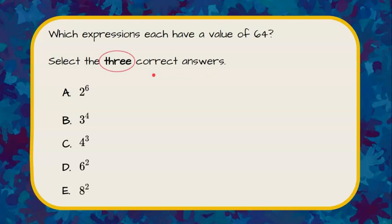First, notice that we're going to identify three correct answers that have a value of 64 from these five choices. We're given five different values and we want to evaluate each to see which of them equal 64, and we should find three.